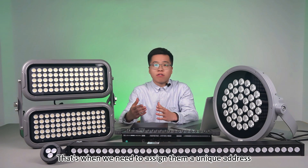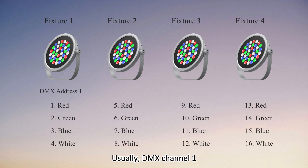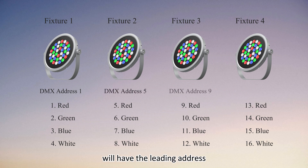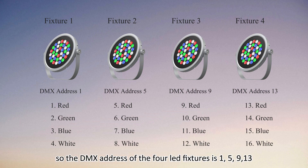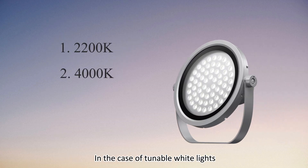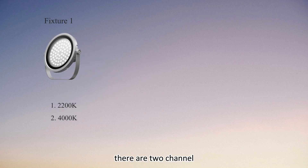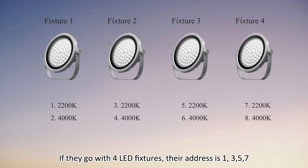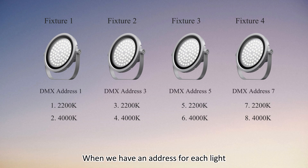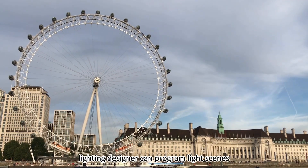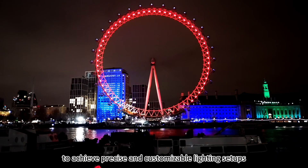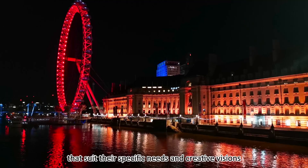That's when we need to assign them a unique address. Usually, DMX channel 1 will have the leading address, followed by DMX channel 5. So the DMX addresses of the four LED fixtures are 1, 5, 9, and 13. In the case of tunable white lights with a color range of 2200 to 4000K, there are two channels per fixture. If you go with four LED fixtures, their addresses are 1, 3, 5, and 7. When we have an address for each fixture, a lighting designer can program light scenes to achieve precise and customizable lighting setups that suit their specific needs and creative visions.